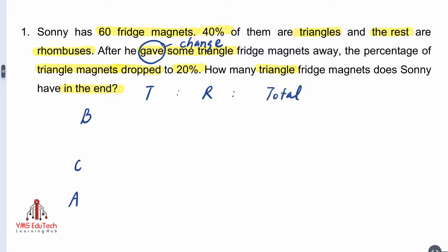From the question, we know that there are 60 fridge magnets at first. We're going to convert 40% into a fraction — that makes 40 out of 100, equivalent to 2 out of 5. Which means at first there were 2 units of triangle magnets and 5 units in total. Hence, there were 3 units of rhombus magnets.